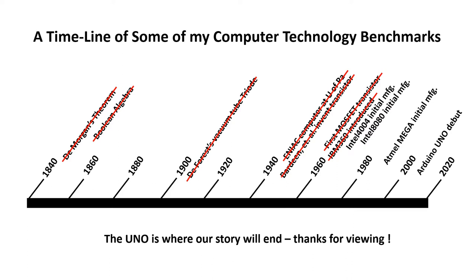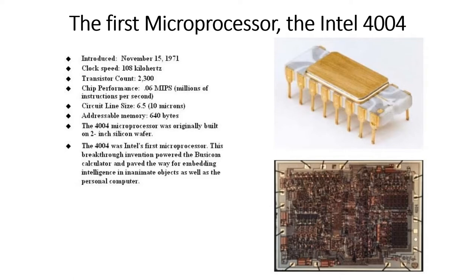Semiconductor technology really went crazy through the 1960s, and on November 15th, 1971 the Intel 4004 — truly a benchmark device — became the first microprocessor. Some of the specifications: the clock speed was only 100,000 cycles per second, and the chip had 2,300 transistors as you can see in the photograph in the lower right.